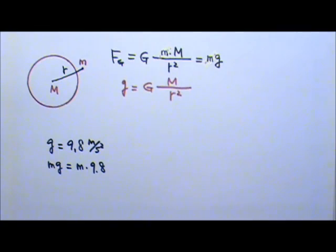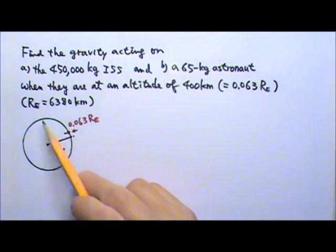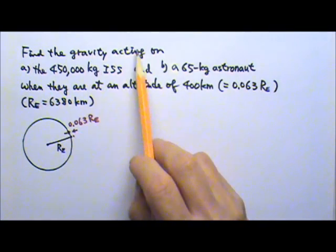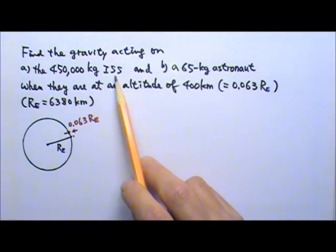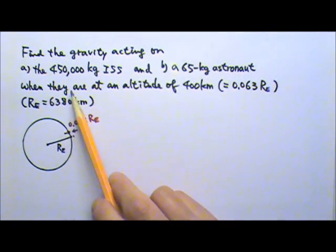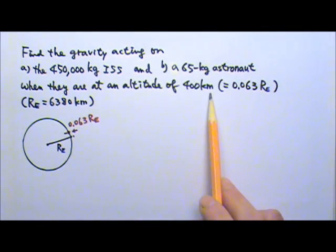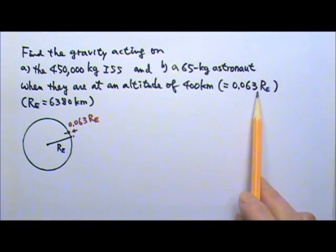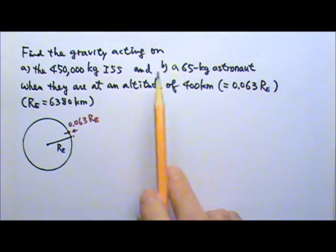Now let's do a couple of problems. Here you have the International Space Station orbiting the Earth. Find the gravity acting on the 450,000 kg International Space Station and a 65 kg astronaut when they are at an altitude of 400 kilometers above the ground. The 400 kilometers equals 0.063 times the Earth's radius, and the Earth's radius equals 6,380 kilometers. See if you can find those, A and B.